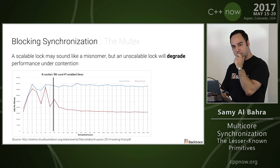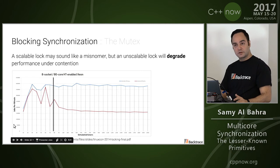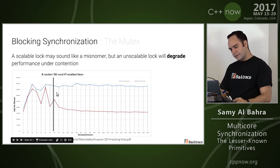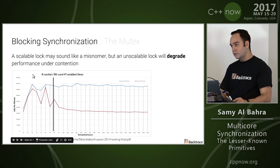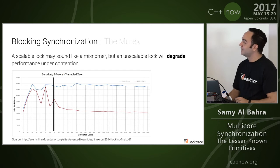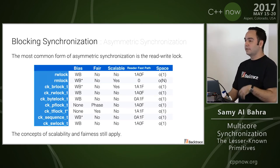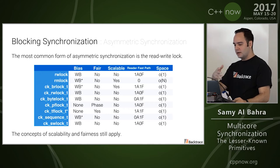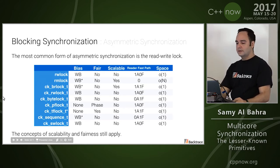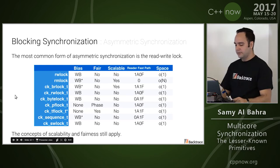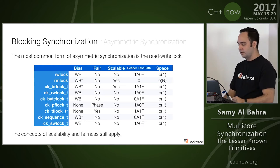There is also a lot of variety as far as read-write locks are concerned. A read-write lock is an example of asymmetric synchronization. The table shows the variety — feel free, once you get the slides, to Google some of these. The concept of scalability and fairness still apply. 'A' in the table is the number of atomics on the fast path, and 'F' is the number of fences on at least non-TSO architectures.